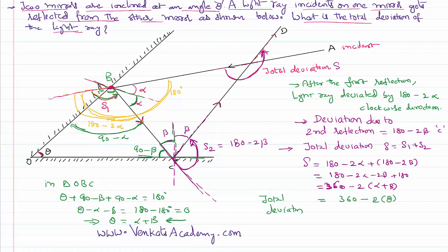This is the final result for the total deviation of the light ray after two reflections — one at the first mirror and one at the second mirror.